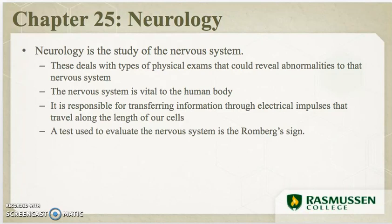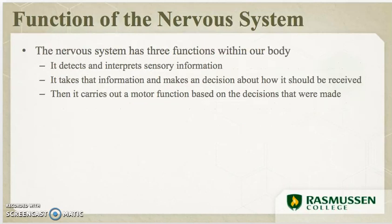The nervous system has three main functions: to detect and interpret sensory information, take information that it has received and make a decision about how it should be processed, and then carry out another function based upon the decision that was made.